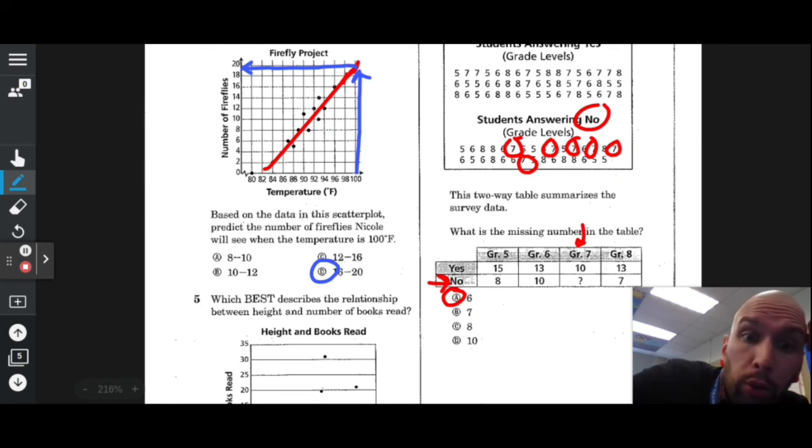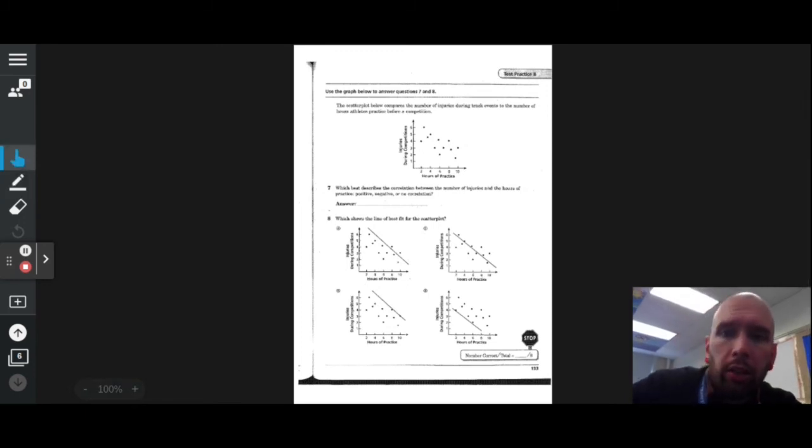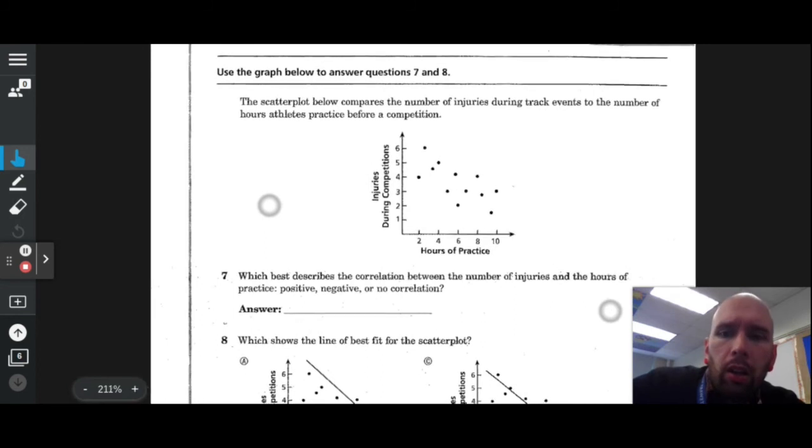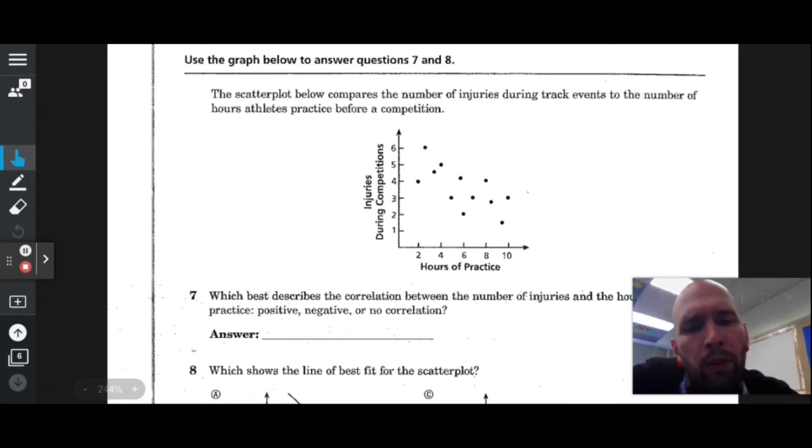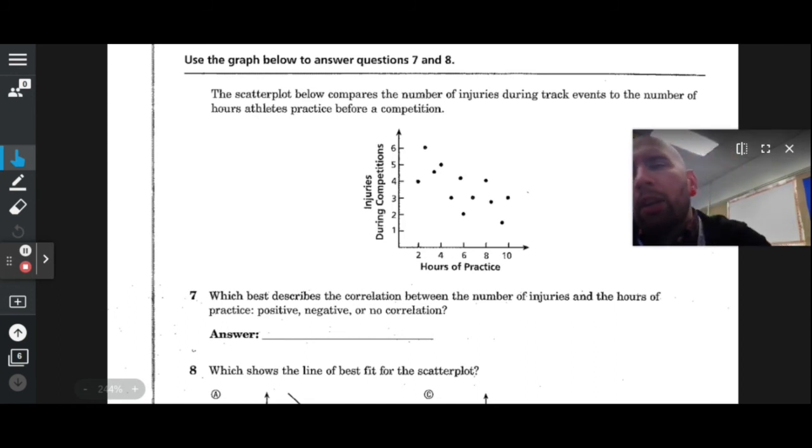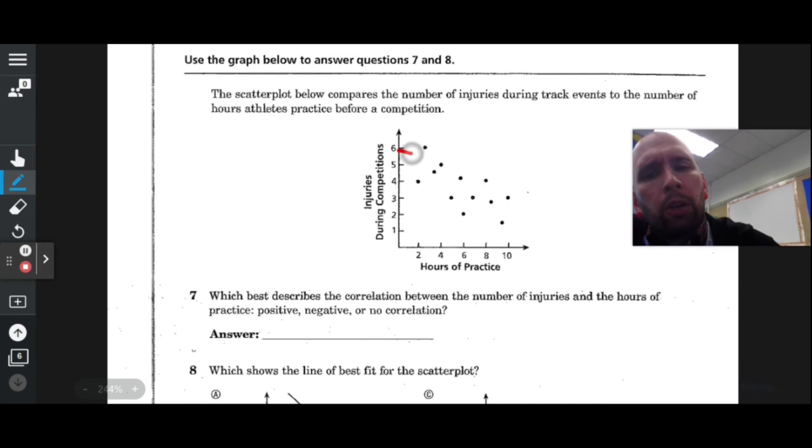Here we are, the last page, second to the last problem. The scatter plot below compares the number of injuries during track events to the number of hours athletes practice before competition. Which best describes the correlation between the number of injuries and the hours of practice? Positive, negative, or no? Let's draw a picture. As the hours increase, the injuries decrease. So this is definitely a negative.